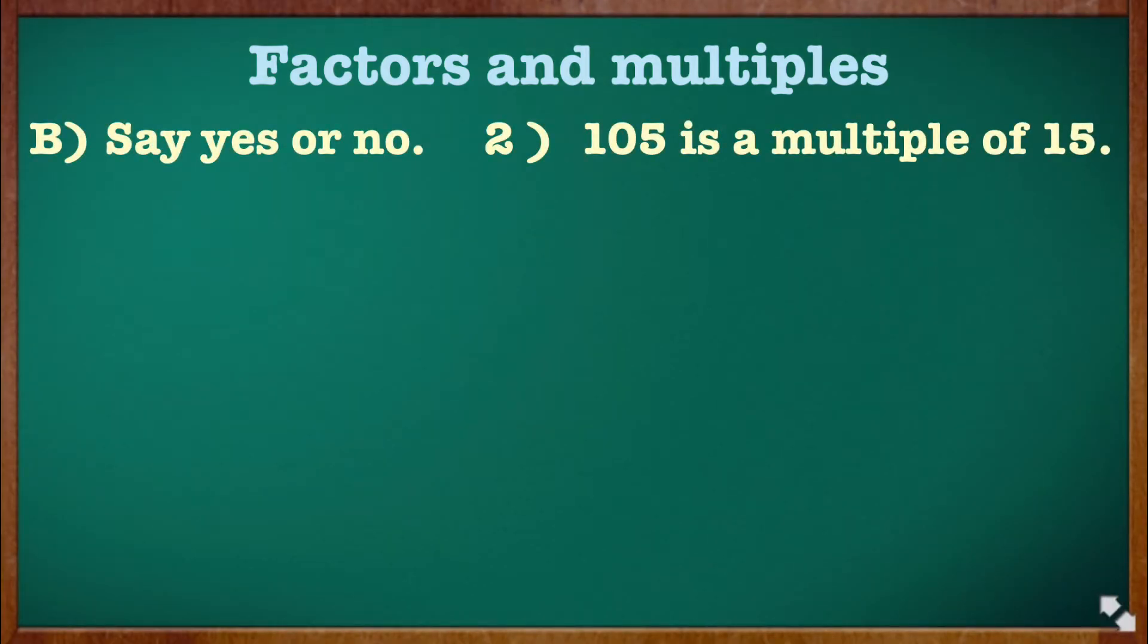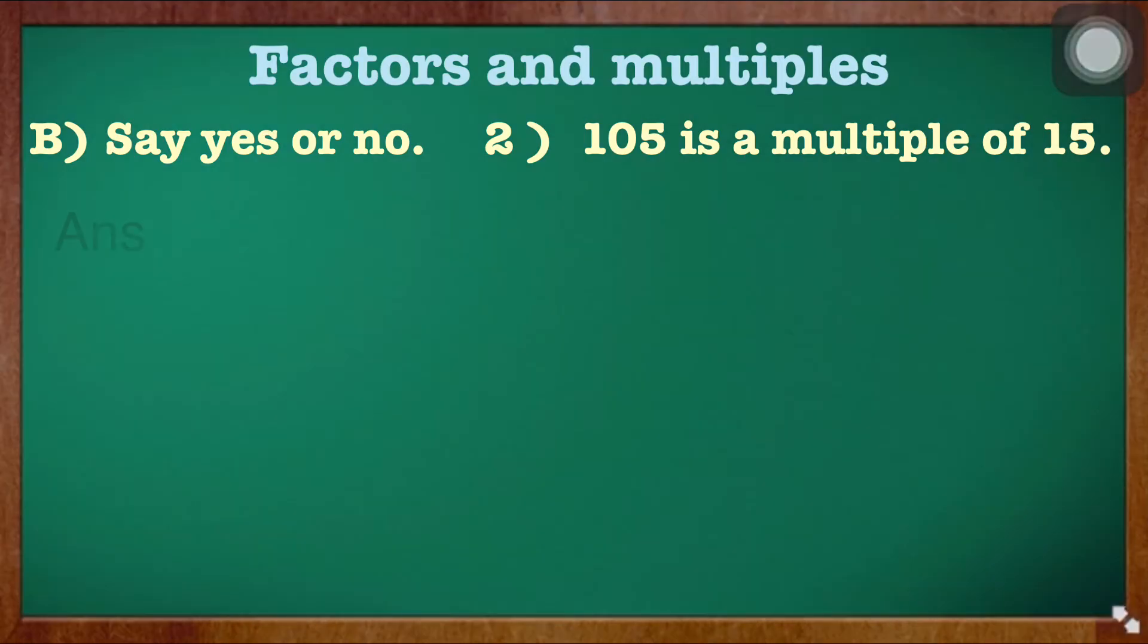Next, problem B, question number 2: 105 is the multiple of 15. Here also we can use the division method. Write 105 inside the bracket and 15 outside. Now check if 105 is in the 15 times table. 15 × 7 times we will get 105.